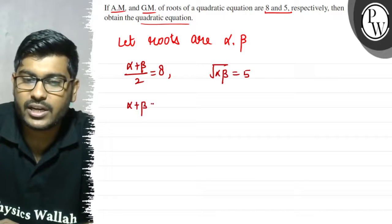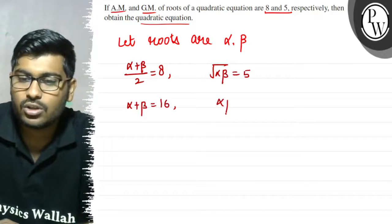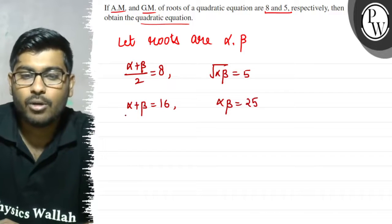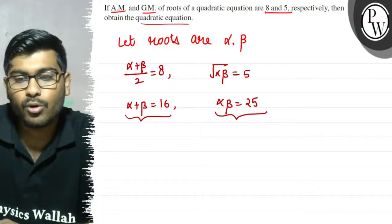So basically alpha plus beta is how much? 16. We will be squaring, and alpha into beta is how much? 25. So we have sum of roots and product of roots.